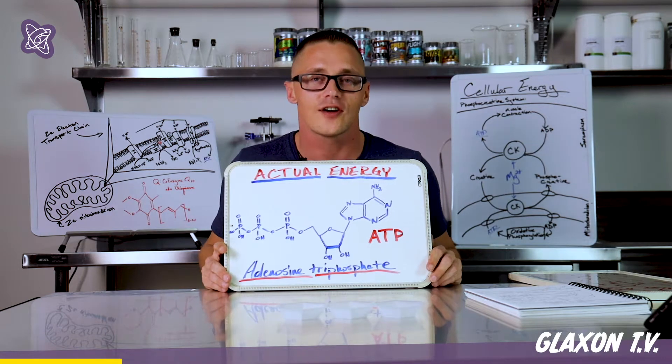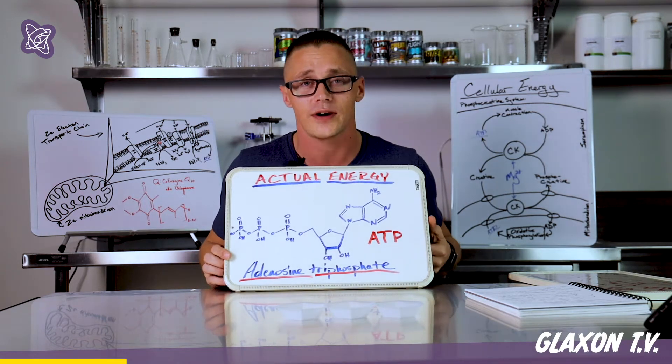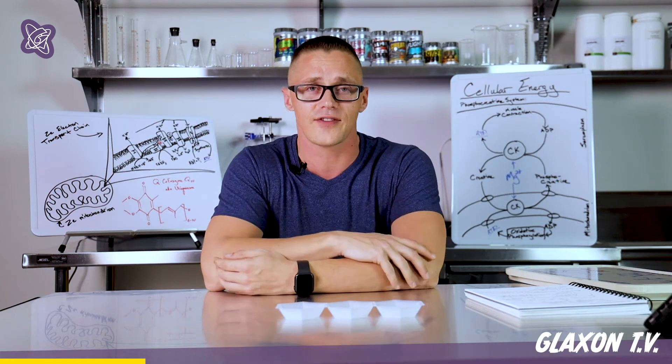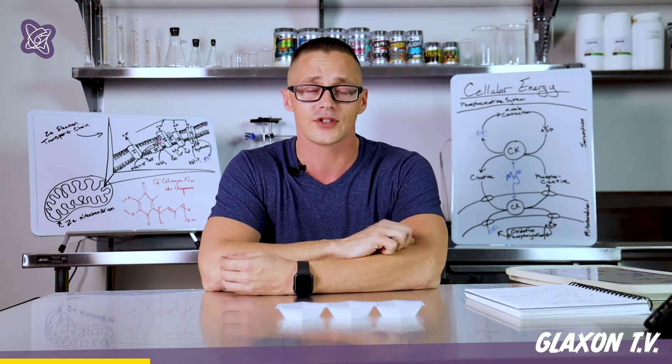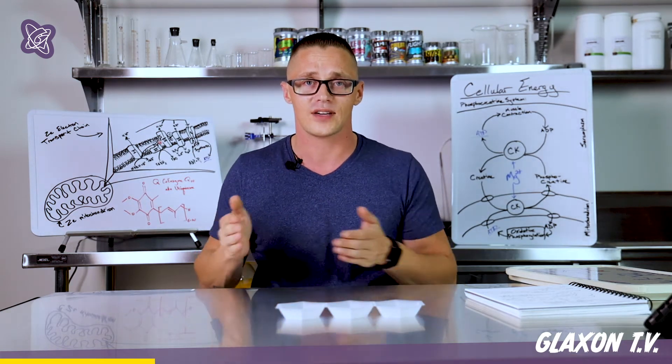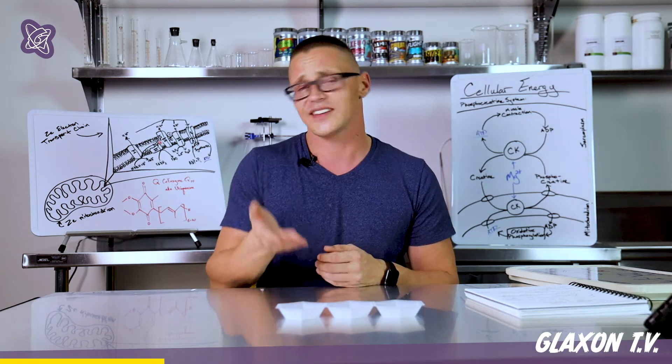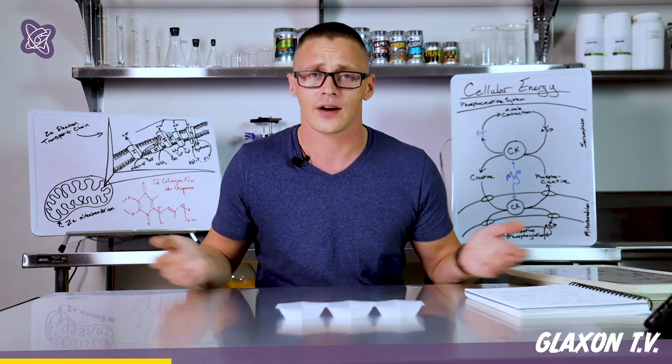If it weren't for ATP, your carbs wouldn't go anywhere, and your fat wouldn't go anywhere, and you wouldn't be able to move, because this is basically how it all gets done. So, how does Adrenal do this? Adrenal includes two weird things if you've actually looked at this formula. One of them is creatine magna power, or a creatine magnesium chelate, and then the other one is coenzyme Q10. What are you guys doing here?